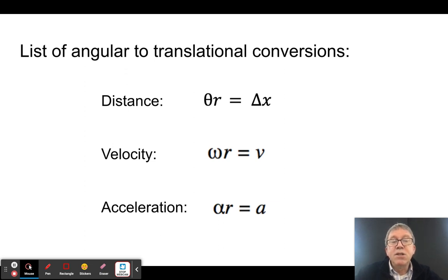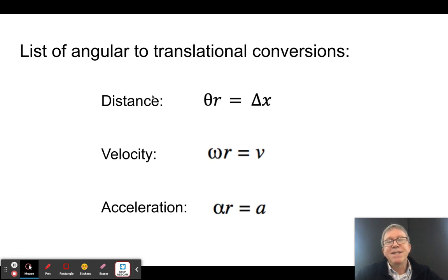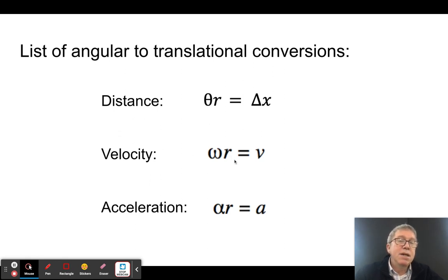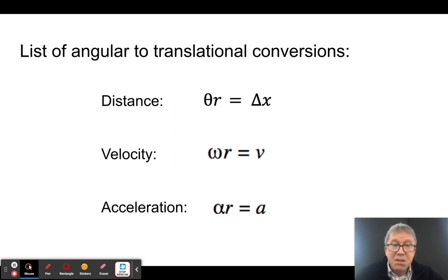Here's the list of things to memorize today, and it's not hard — memorize one and you've memorized all three. Displacement: theta times r equals delta x. Velocity: omega times r equals v. Acceleration: alpha times r equals a. Just take the angular or rotational value, put an r next to it, and you've got the translational equivalent.